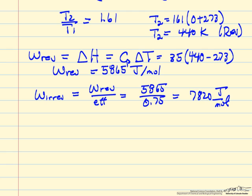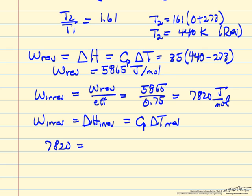Well now our fourth step is to use the same first law relation, but now for the irreversible case, and of course delta T for the irreversible case. So that means 7820, which is the work, is the heat capacity. The T2 irreversible minus T1, which is 273.